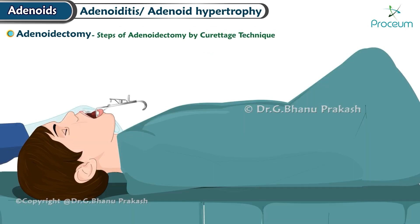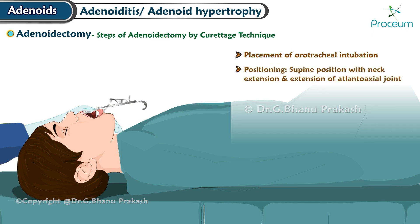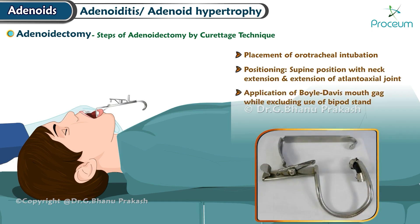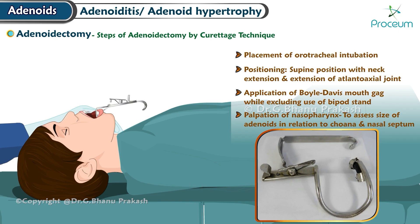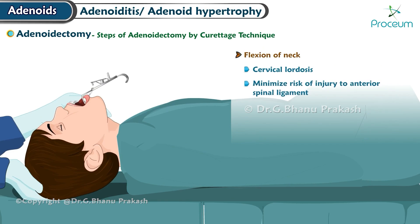Steps of adenoidectomy by curettage technique: (1) Placement of oral tracheal intubation. (2) Positioning — supine position with neck extension and extension of the atlanto-axial joint. (3) Application of the Boyle-Davis mouth gag while excluding the use of a bipod stand. (4) Palpation of the nasopharynx to assess the size of the adenoids in relation to the choanal openings and the nasal septum. (5) Flexion of the neck to prevent cervical lordosis and minimize risk of injury to the anterior spinal ligament.